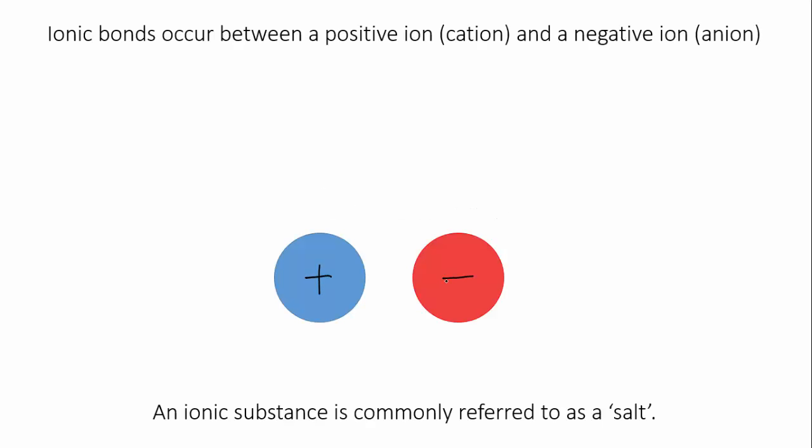Ionic bonds occur between a positive ion, called a cation, and a negative ion, called an anion, because of the electrostatic attraction between the opposite charges. An ionic substance is referred to as a salt.